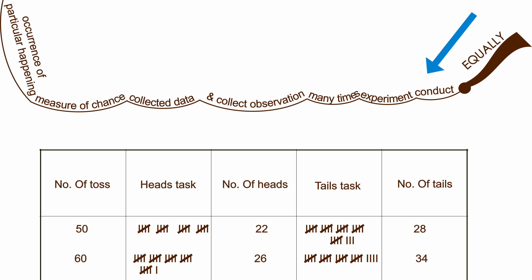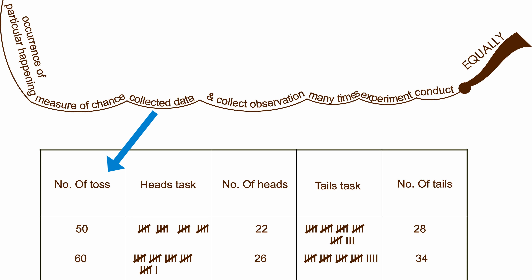Let us look at the table — the result sheet — where we keep on increasing the tosses. Here, the number of tosses are 50 and 60. The tally marks show the number of heads and the number of tails. In this way, we will collect the data.